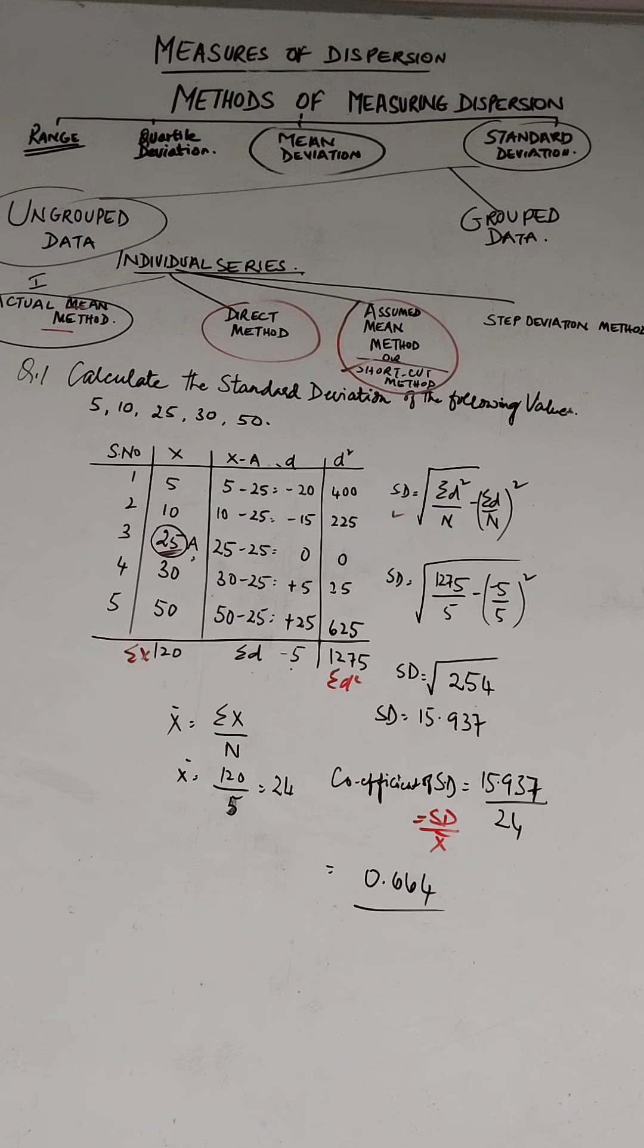The following steps are taken. First, take any value of the series. Like I selected 25 as the assumed mean. Then in the next column, take the deviations of the items from the assumed mean, X minus A, and denote it by small d.